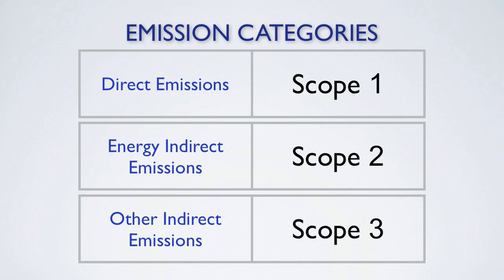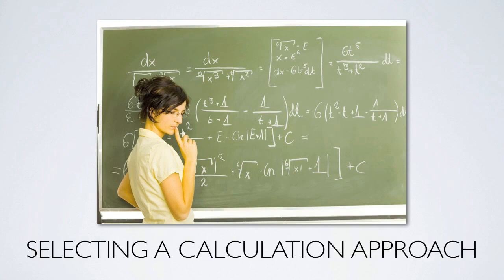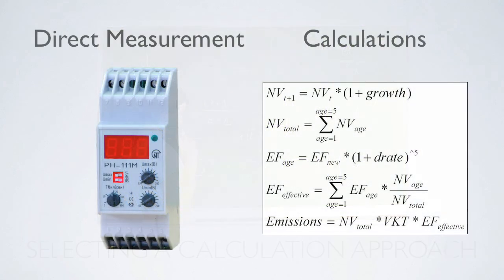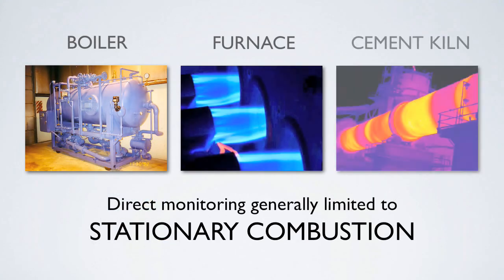Once all emission sources have been identified and categorized, a calculation method should be selected in order to quantify the actual emissions into the atmosphere. There are two primary methods for assessing greenhouse gas emissions: direct measurement and the use of calculations. Direct measurement of greenhouse gas emissions by monitoring concentration and flow rates has traditionally been limited to stationary combustion applications such as boilers, furnaces, and kilns.